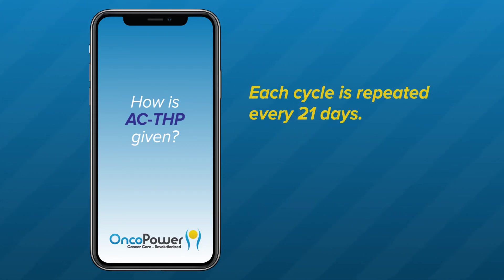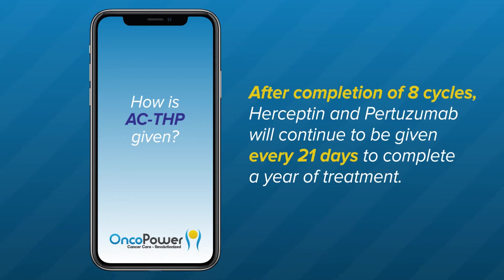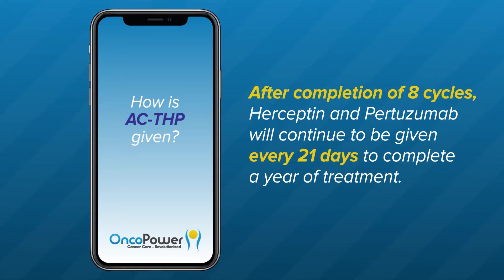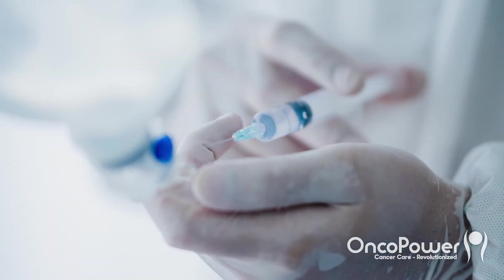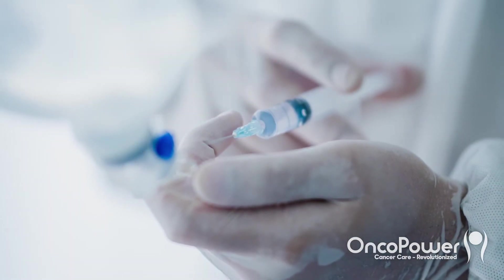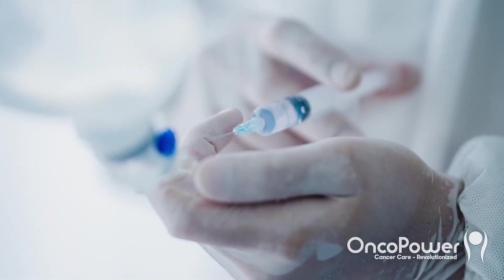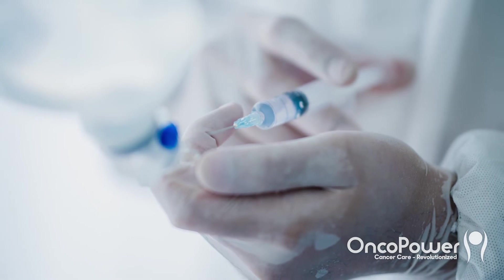Each cycle is repeated every 21 days. After completion of eight cycles of treatment, Herceptin and pertuzumab will continue to be given every 21 days to complete a year of treatment with these two drugs. Each of these drugs are given through the veins over an average one-hour infusion.